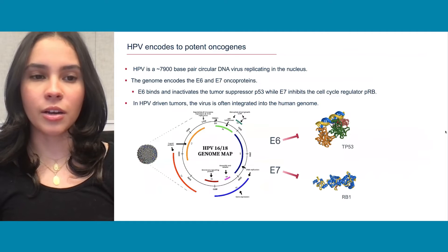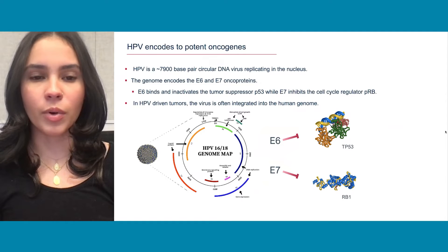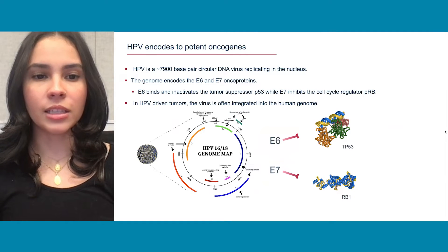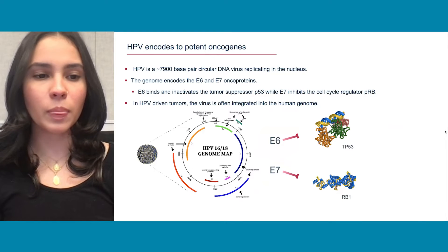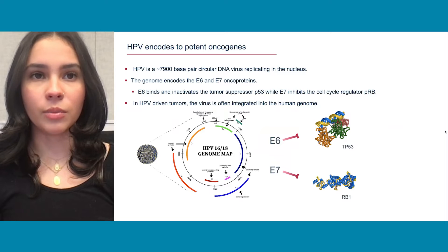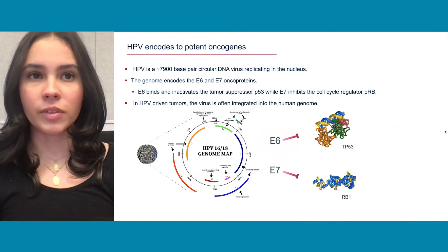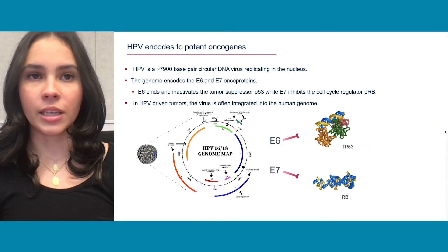HPV is a 7,900-base-pair circular DNA virus that replicates in the nucleus. It encodes the E6 and E7 oncoproteins: E6 binds and inactivates the tumor suppressor P53, while E7 inhibits the cell cycle regulator PRB. In HPV-driven tumors, the virus is often integrated in the human genome. Although integration is not primarily a component of HPV's life cycle, it seems to occur randomly, and if it does occur, it can lead to the formation of tumors and cancers.